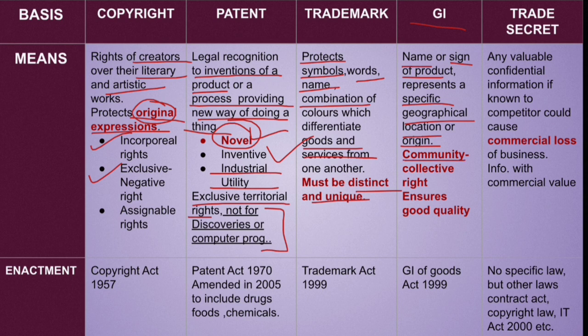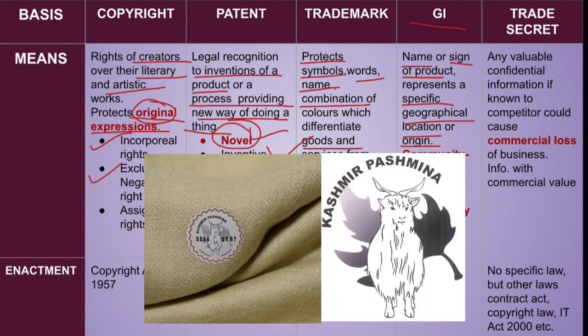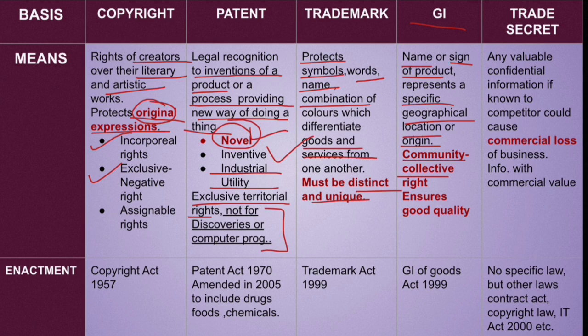You cannot take a trademark for community items — these are community collective rights. A specific individual person cannot take a geographical indication for their own product. These are collective rights. For example, Pashmina shawls — people everywhere are selling them, but the actual origin is Kashmir. So the manufacturers of Kashmir have taken the geographical indication over that Pashmina. When you buy original Pashmina, you will see that logo, and you can recognize its standard and quality on that basis — like a standardization or hallmark.